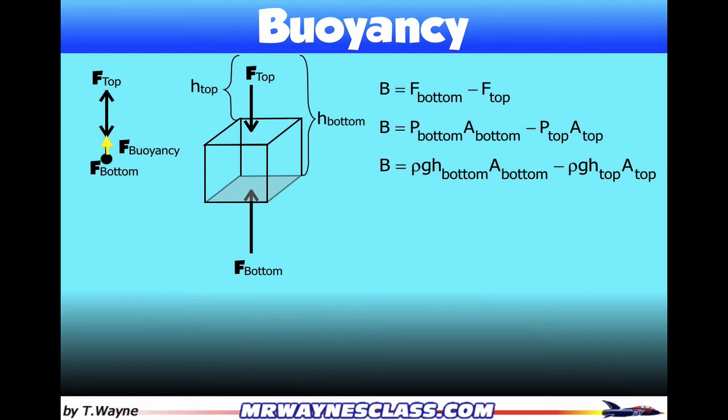Now I can use the distributive property and combine some terms, so I get rho g a times the difference between the height of the bottom and the height of the top.